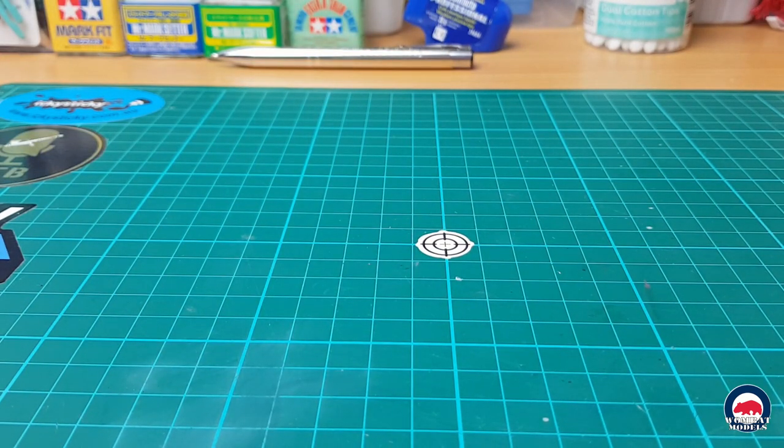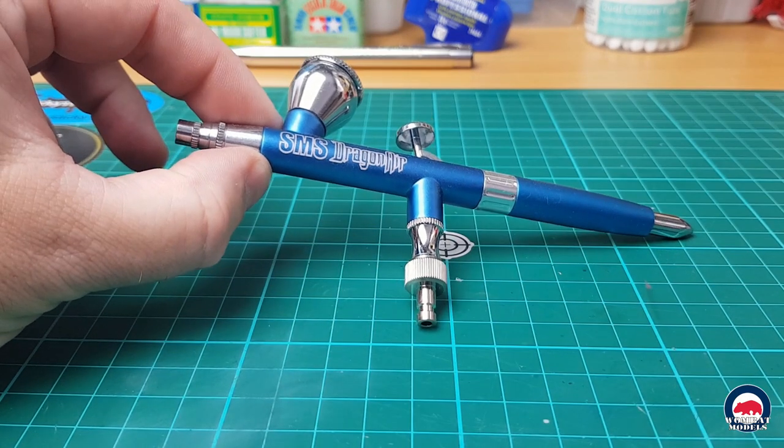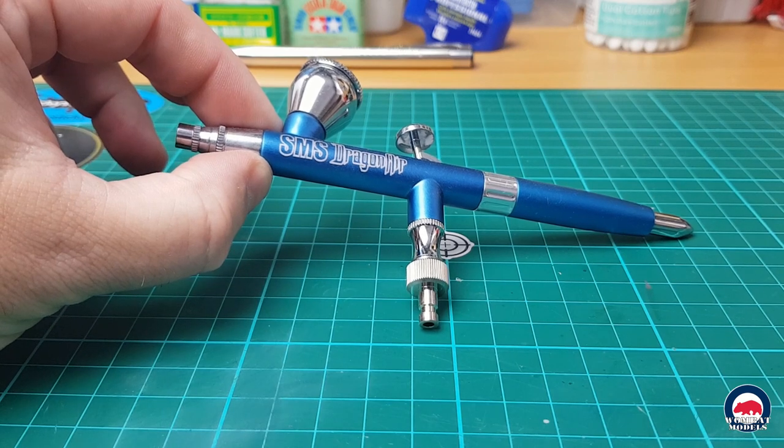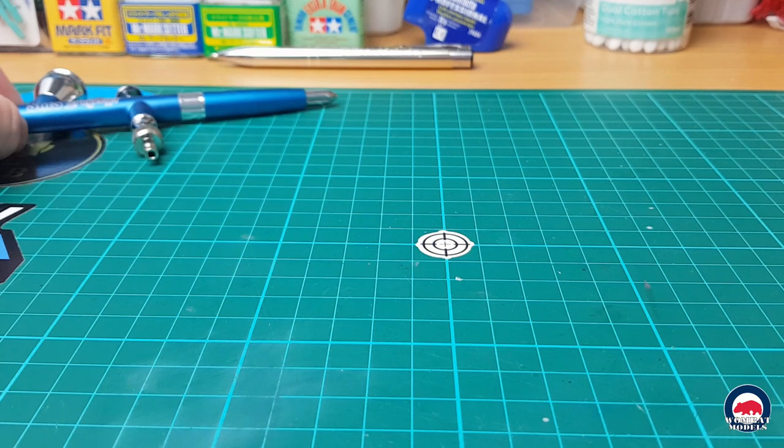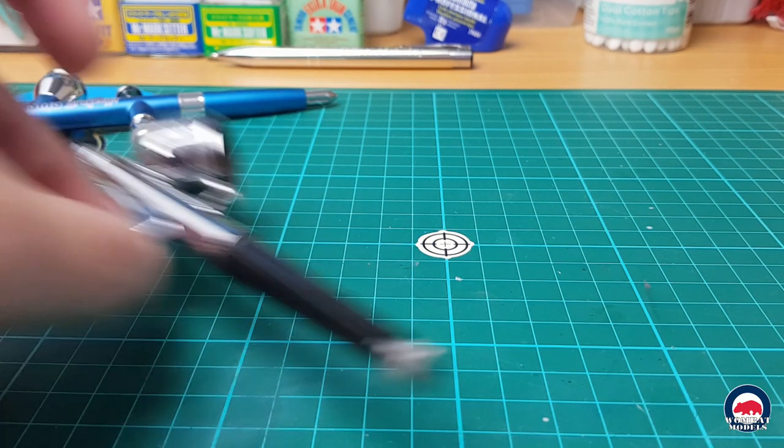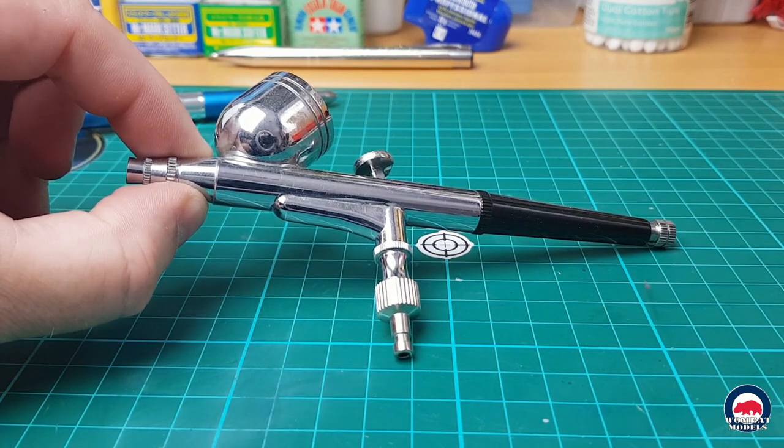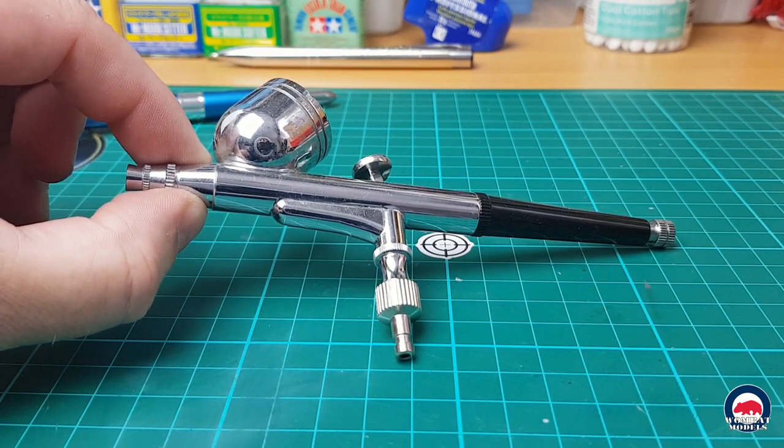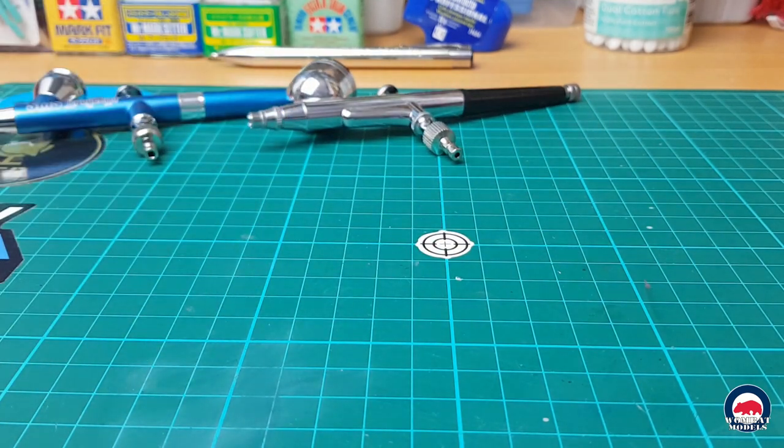But when it comes to airbrushing, I've got three airbrushes on the go. So first up we have the SMS Dragonair Blue, which is fitted with a 0.2 mm needle. So use that for all the really fine work. Then we have what was my old workhorse for a long time. So that's my Hseng HS80, just a cheap Chinese airbrush, the 0.3 mm needle. It's been working great for me for quite a long time, so I still use that one.